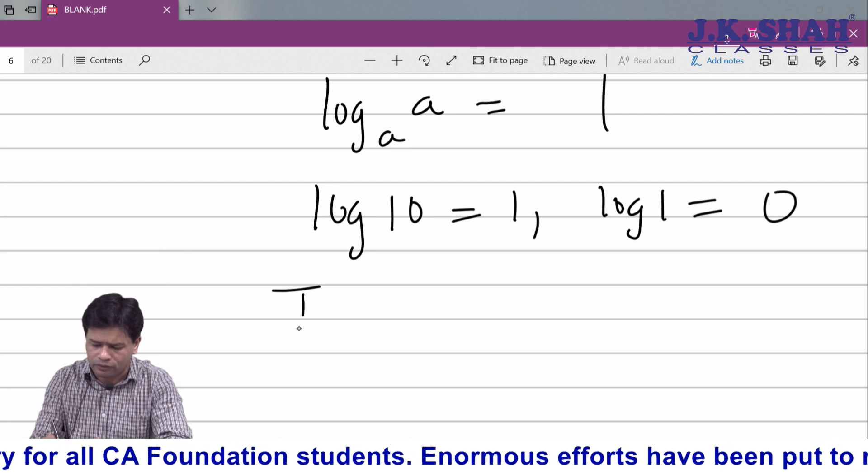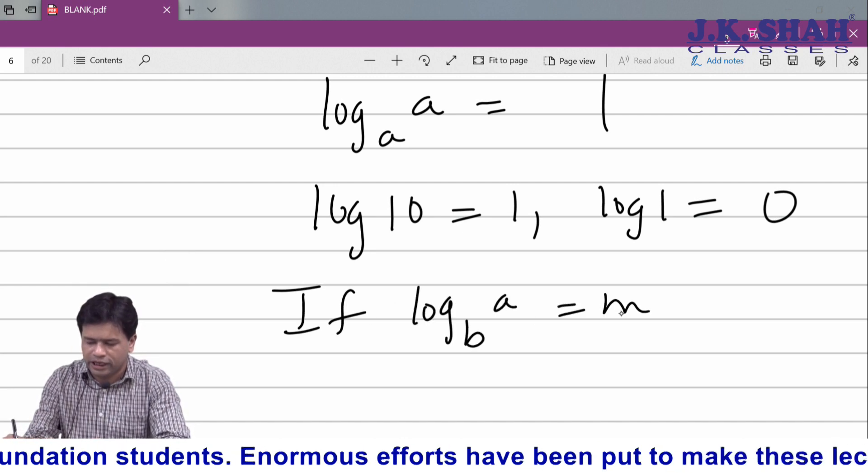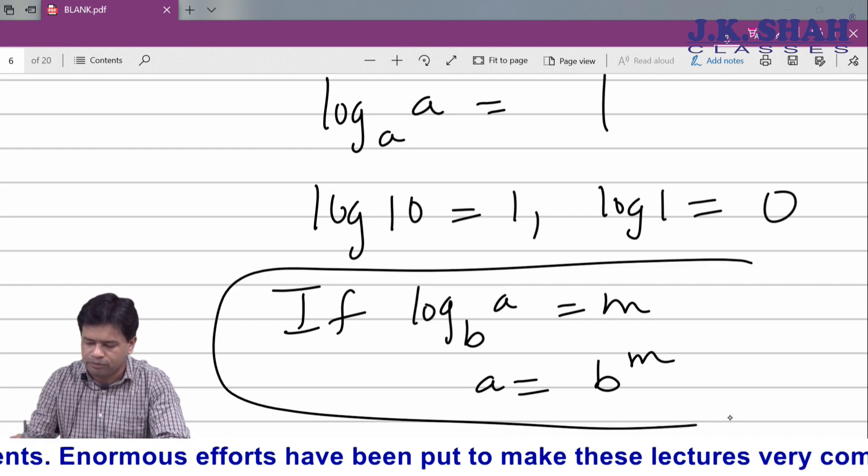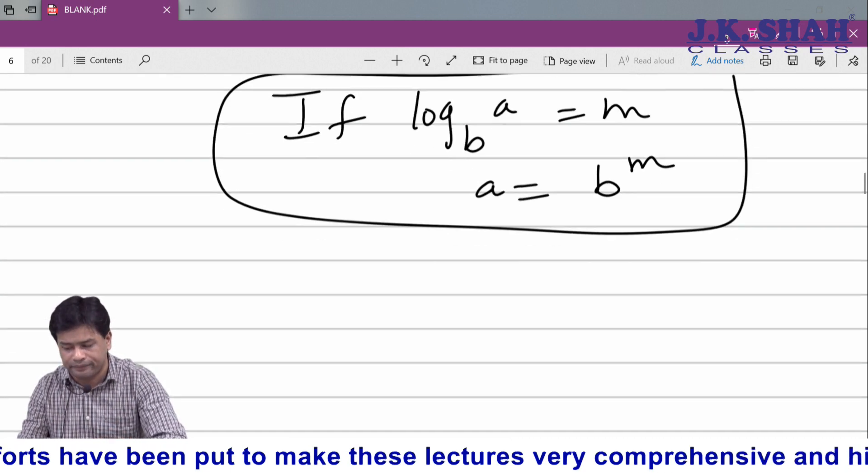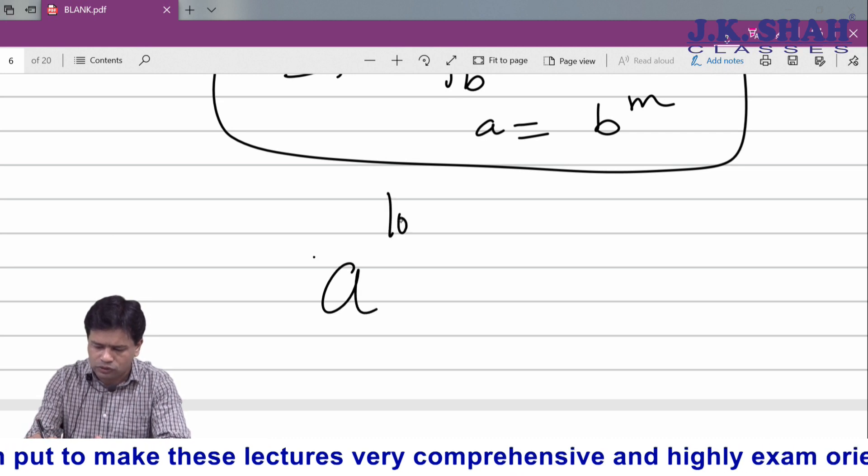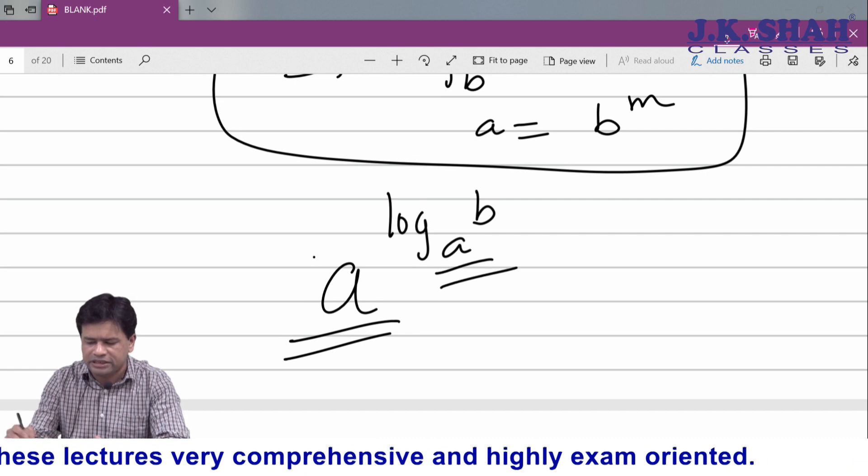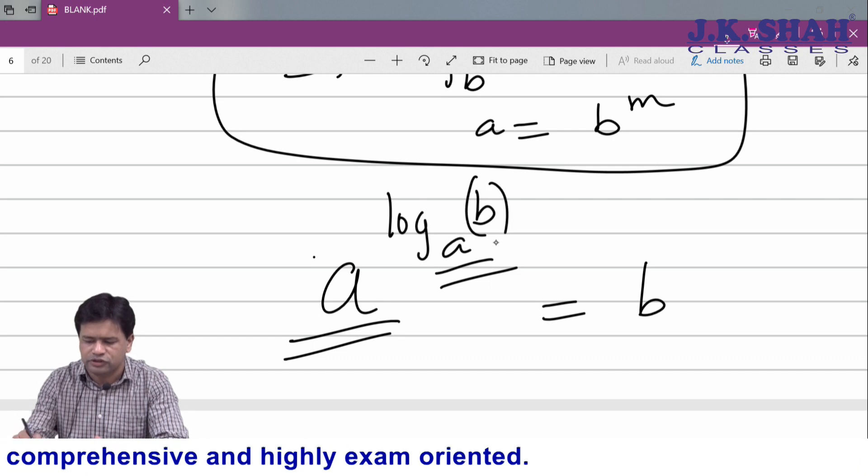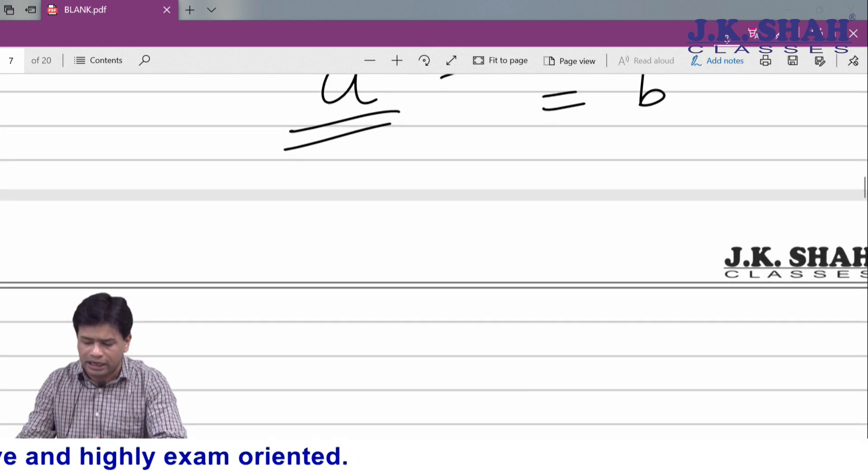Then, if log of a to the base b equals m, then a equals b raised to m - an important property where you convert log into exponential. Then a raised to log of b to the base a: if the original base and base of logarithm are the same, then its interpretation is the function which is written after log - the resultant value is b.